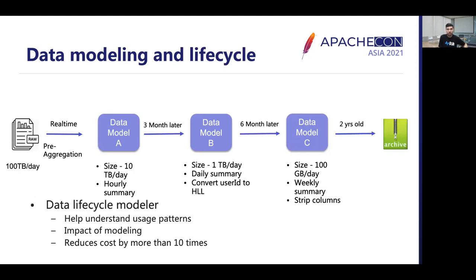Next came data modeling and lifecycle. It's really hard to come up with optimal data models, and these models continuously need to be evolved over time. The workload and use cases shift, and it is better to revisit data models every time there is a change in usage patterns. As shown in the illustration here, raw data at almost 100 TB in size is first aggregated and stored as data model A — an early summary of raw data that is almost 10 times smaller. Just by pre-aggregating the data, you can see 10x performance improvements as well as cost improvements.